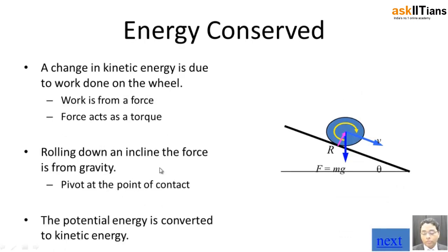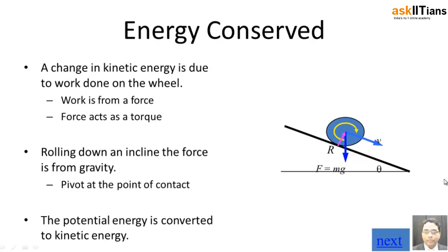Finally, for energy conservation: if a wheel is rotating and moving in a downward direction, there is a change in kinetic energy due to work done on the wheel. A force acts on it making it go downwards, and as a result the potential energy is converted — this applies to both translational and rotational motion.